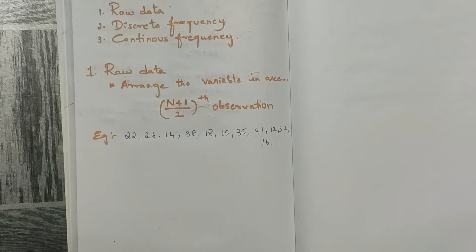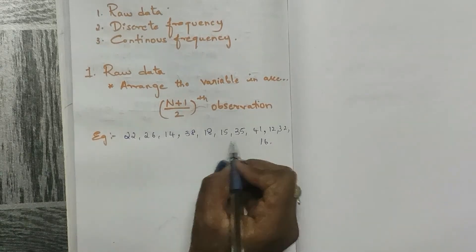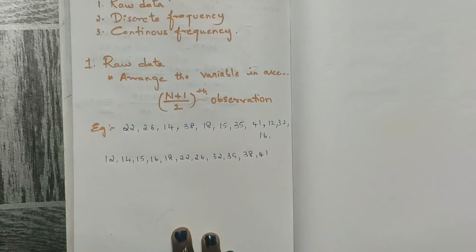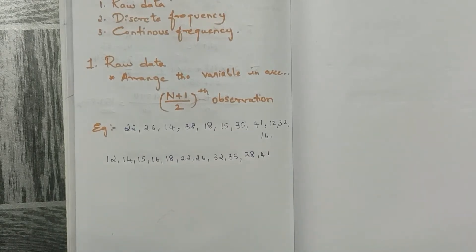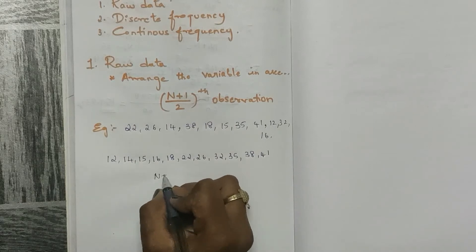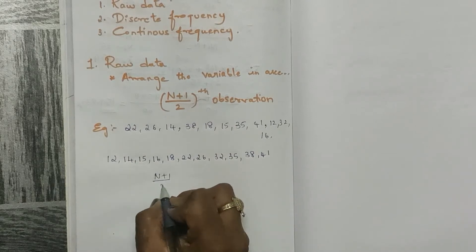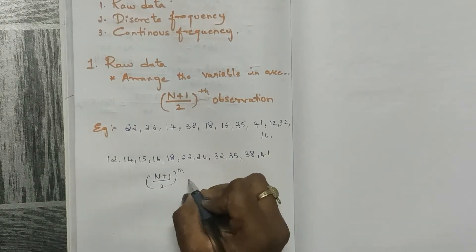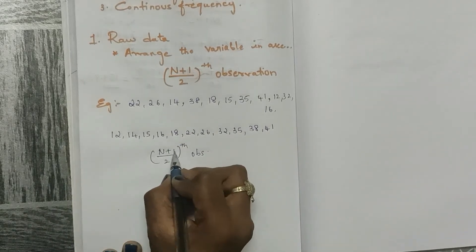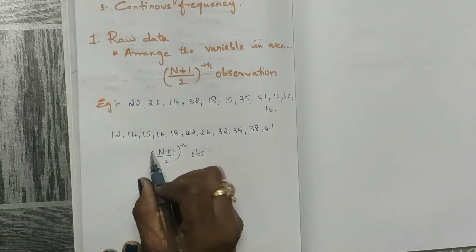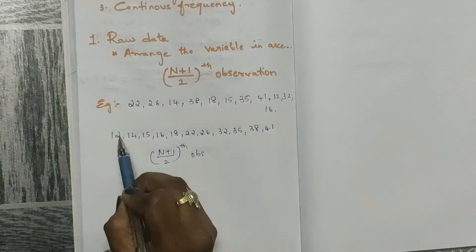The first rule is that we have to arrange the variables in ascending order. I have arranged the variables in ascending order. Now let us apply the formula: (n+1)/2, where n is the total number of variables.